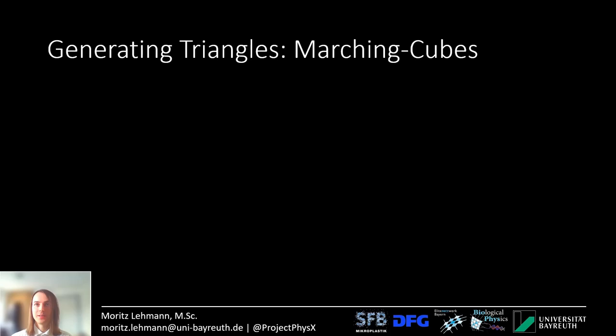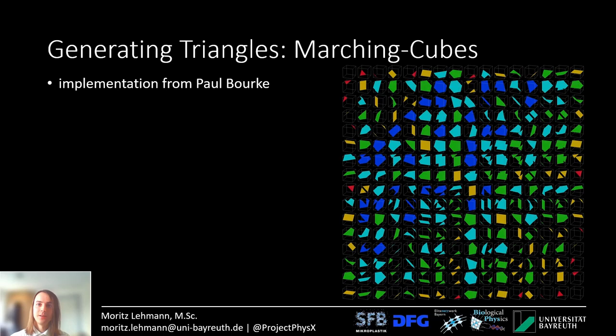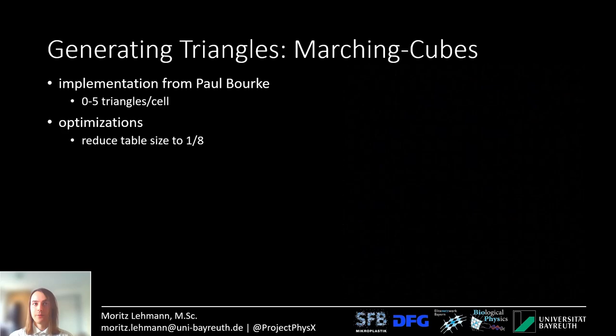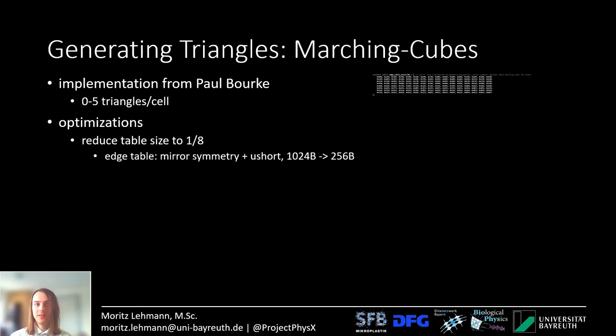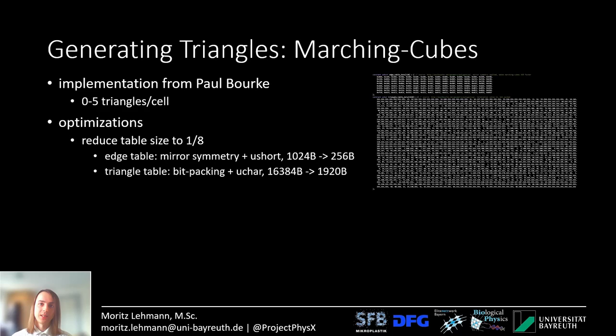How do I generate the triangles? I use the marching cubes implementation from Paul Burke. Here I have visualized all the different triangle cases in the triangle table — you can have between 0 and 5 triangles per grid cell. I did a few optimizations to this excellent implementation. I reduced the overall table size to only one eighth. For the edge table there is mirror symmetry and I reduced the data type to 16-bit integer; for the triangle table I use bit packing to reduce it to only 8-bit integer.